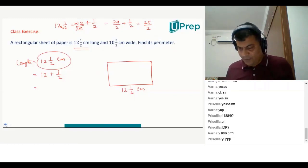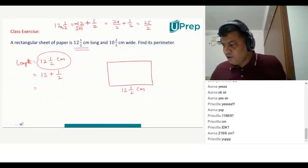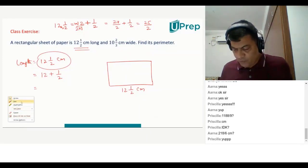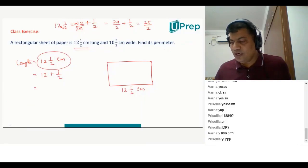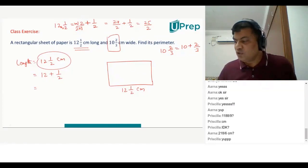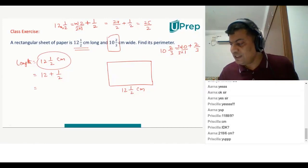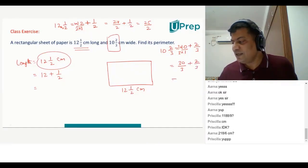If you want more examples, let me do that before we go to this problem. For example, 10 and 2 by 3. In detail: 10 and 2 by 3 means 10 plus 2 by 3. We have 3 in the denominator, and 10 means 10 divided by 1. So we multiply with 3: 3 into 10 is 30. Then 30 by 3 plus 2 by 3, and that is 32 by 3 because we have the same denominator.